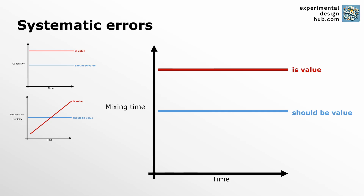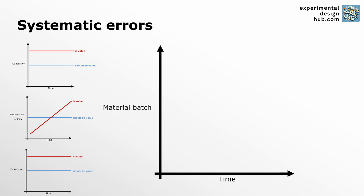Common sources for systematic errors are often instrument calibration issues. If the calibration of your instrument is not correct, all the measurements that you take will be consistently off. Another example could be biased sampling — if you take a sample from a mixture that has not been properly mixed and you only take that sample from the very top, that is also a bias in your result and it will cause your results to be consistently off.